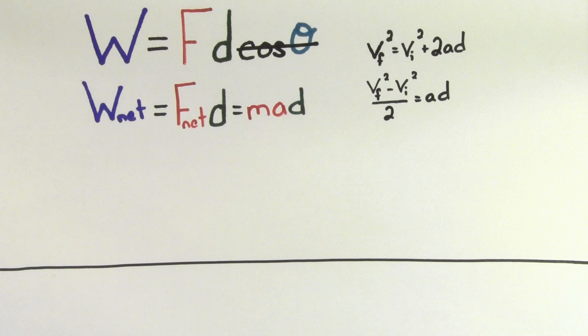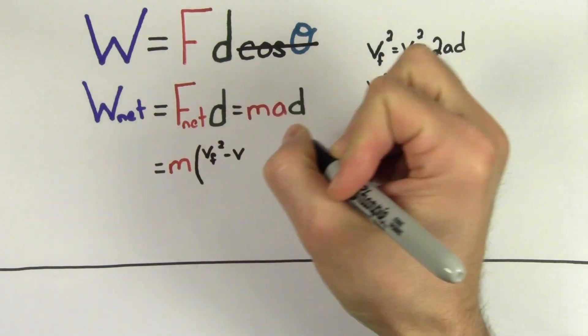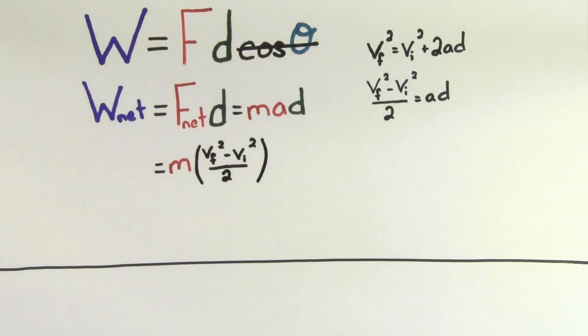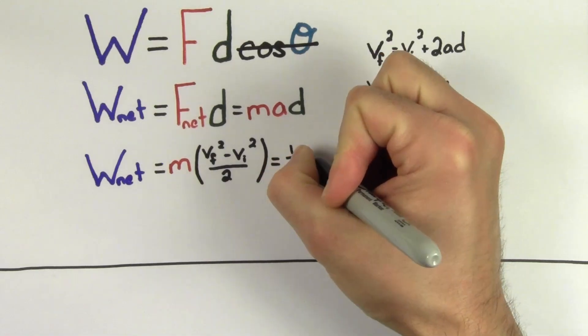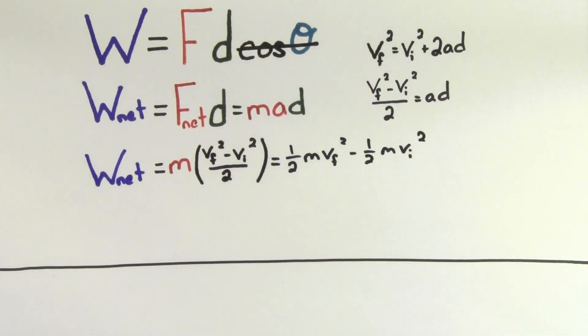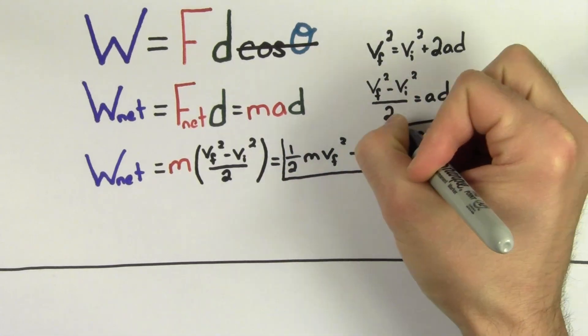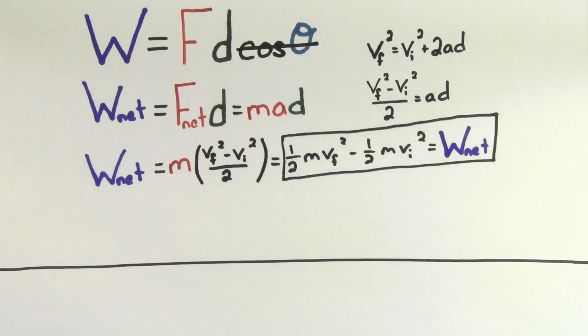Since this is what a times d equals, I can replace the a times d in my net work formula. I find that the net work is equal to the mass times the quantity v-final squared minus v-initial squared, divided by 2. Multiplying through, the net work equals one-half mass times the final velocity squared minus one-half mass times the initial velocity squared. In other words, the net work or total work is equal to the difference between the final and initial values of one-half mv squared.